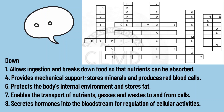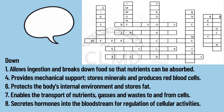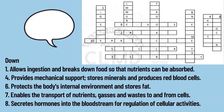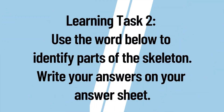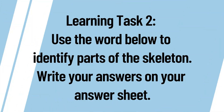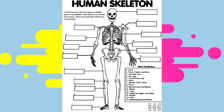For the down portion: Number 1: allows ingestion and breaks down food so nutrients can be absorbed; Number 4: provides mechanical support, stores minerals, and produces red blood cells; Number 6: protects the body's internal environment and stores fat; Number 7: enables transport of nutrients, gases, and waste to and from cells; Number 8: secretes hormones into the bloodstream. For Learning Task 2: use the word bank to identify the parts of the skeleton, writing answers from the skull down to the metacarpals.